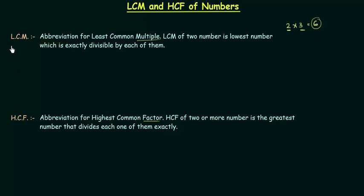Now we will start with LCM, the least common multiple. LCM of two numbers is the lowest number which is exactly divisible by each of them. There are three terms: first is multiple, second is common, and third is least. So we have to first find out multiples, then find out common multiples, and finally find out the least common multiple.